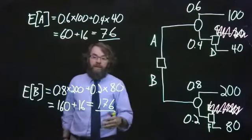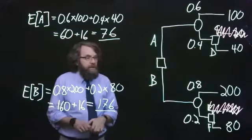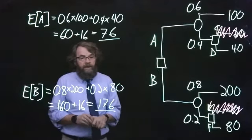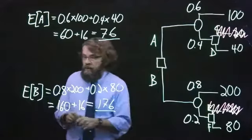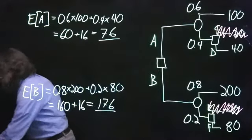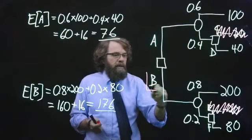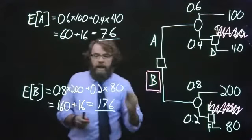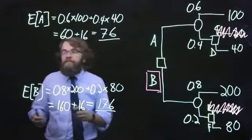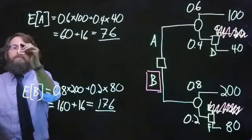Given the choice between $76,000 and $176,000, obviously we would choose option B. So if we look at expected value, option B is our winner, higher expected value. So if we are just looking at expected value, choose B.